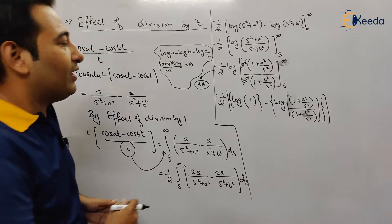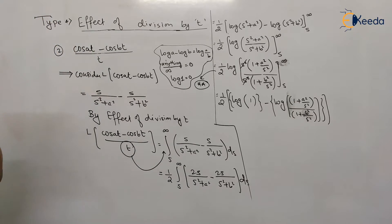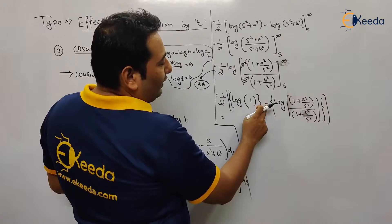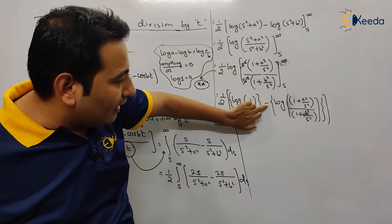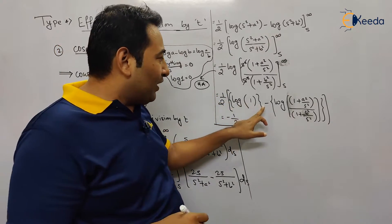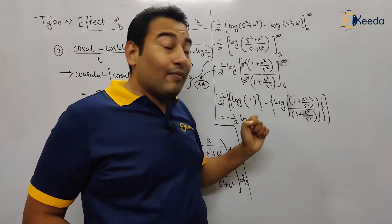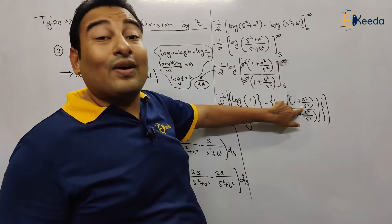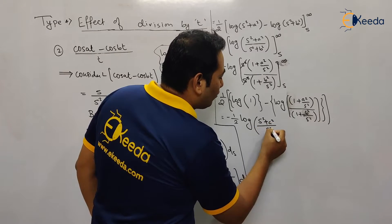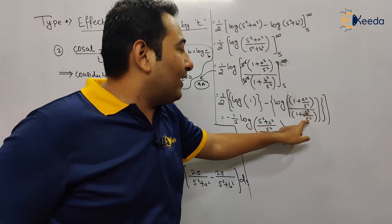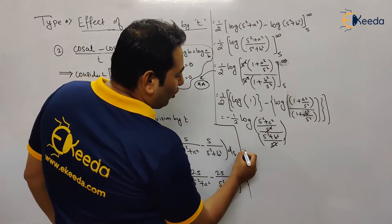Since log 1 = 0, the upper limit term vanishes. Taking the minus sign outside, we get -½ · log[(s²+a²)/(s²+b²)]. Here I simplified the lower limit by taking s² as the LCM, and after cancellation we are left with -½ · log[(s²+a²)/(s²+b²)].